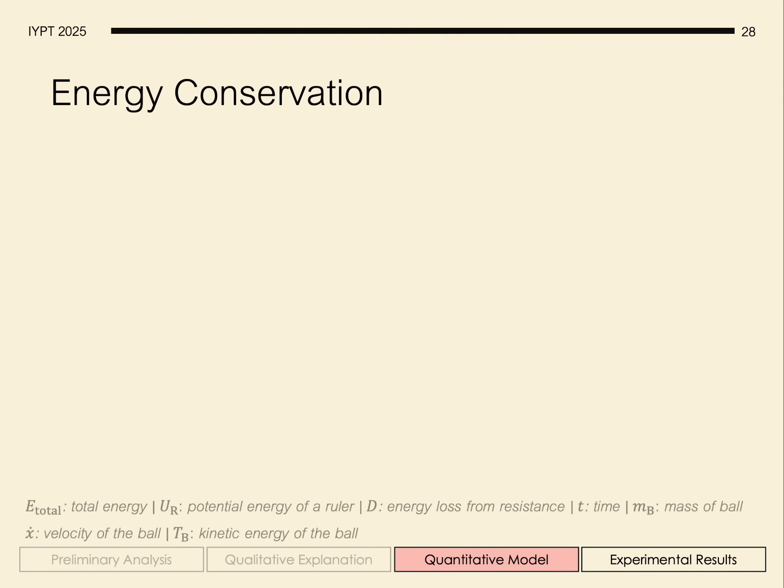Now let's consider the energy during three key stages. In the beginning, the total energy is equal to the sum of the potential energy stored in the two rulers.